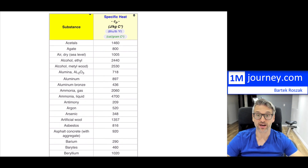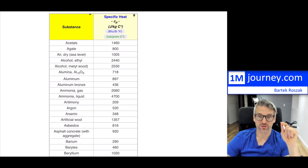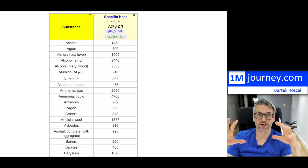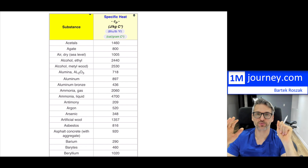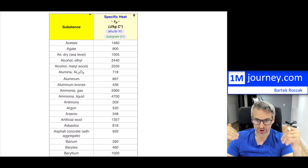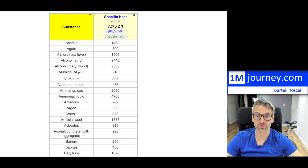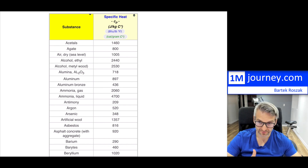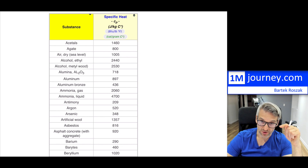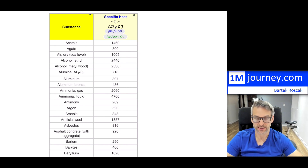Some of these you may not know, but for example, air — the third one — shows 1,005. That means you would need 1,005 joules for every one kilogram of air to increase its temperature by one degree Celsius. Aluminum is 897, so you don't need that much energy to heat aluminum; it's a little bit more of a conductor.